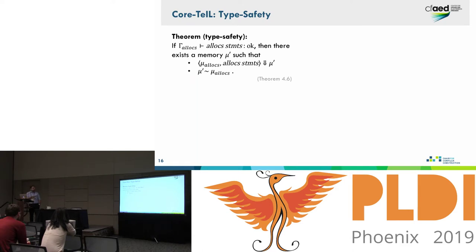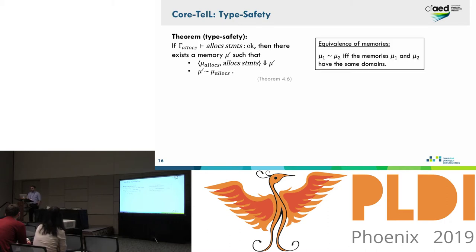Tile is an imperative language, so programs change state — specifically the state of memory. The evaluation of the full program is captured entirely by what it does to memory. A well-typed program transforms the memory mu_allocs that's compatible with the allocations to a memory mu_prime. Mu_prime is equivalent to mu_allocs in the sense that the memories have the same domains. For the purpose of type safety, it's not relevant what values the program computes — all that's relevant is that memories have the same domains, because that affects statements about out-of-bounds access.